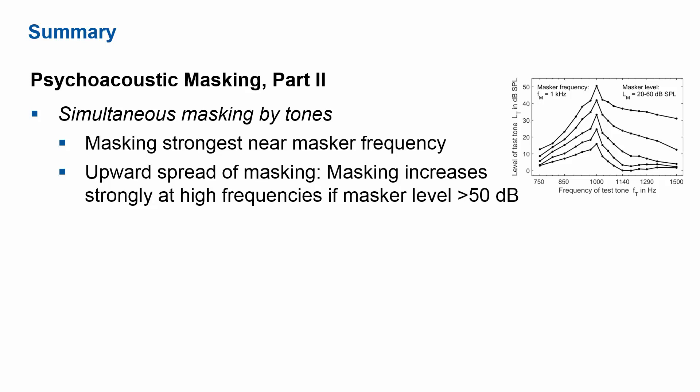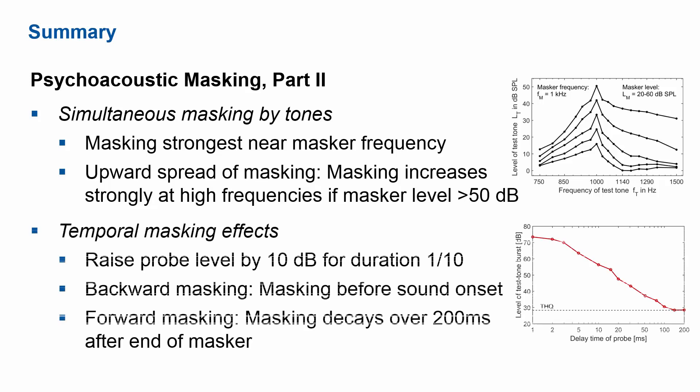This brings us to the summary of the second part of psychoacoustic masking. We considered simultaneous masking by tones on other tones, and we see that similar to noise maskers, masking is most strongly near the masker frequency. We also see very strongly an upward spread of masking — masking increases at high frequencies more than proportionally if the masker level is above 50 dB. We then considered temporal masking effects, looking at the effect of probe duration, and found that when probe duration is shorter than 200 milliseconds, we have to raise its level by 10 dB for each shortening by a factor of 10.